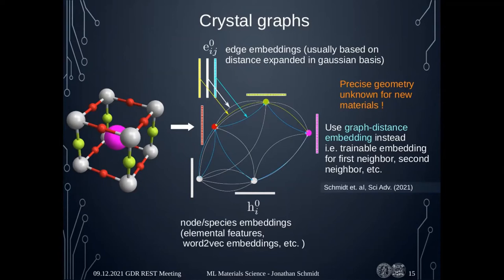If we want to predict something or do a high-throughput search for a prototype, we only know roughly the crystal structure or symmetry — we haven't done geometry optimization yet, so we don't know the distances. If we input the wrong distances, the prediction will be really bad. In our most recent work, we adjusted these networks by replacing exact distance dependence with graph distance — instead of saying this is 3 Ångström away, we say it's the first or second neighbor. This information is imprecise but we can still learn from it, and crucially we can input unrelaxed structures.